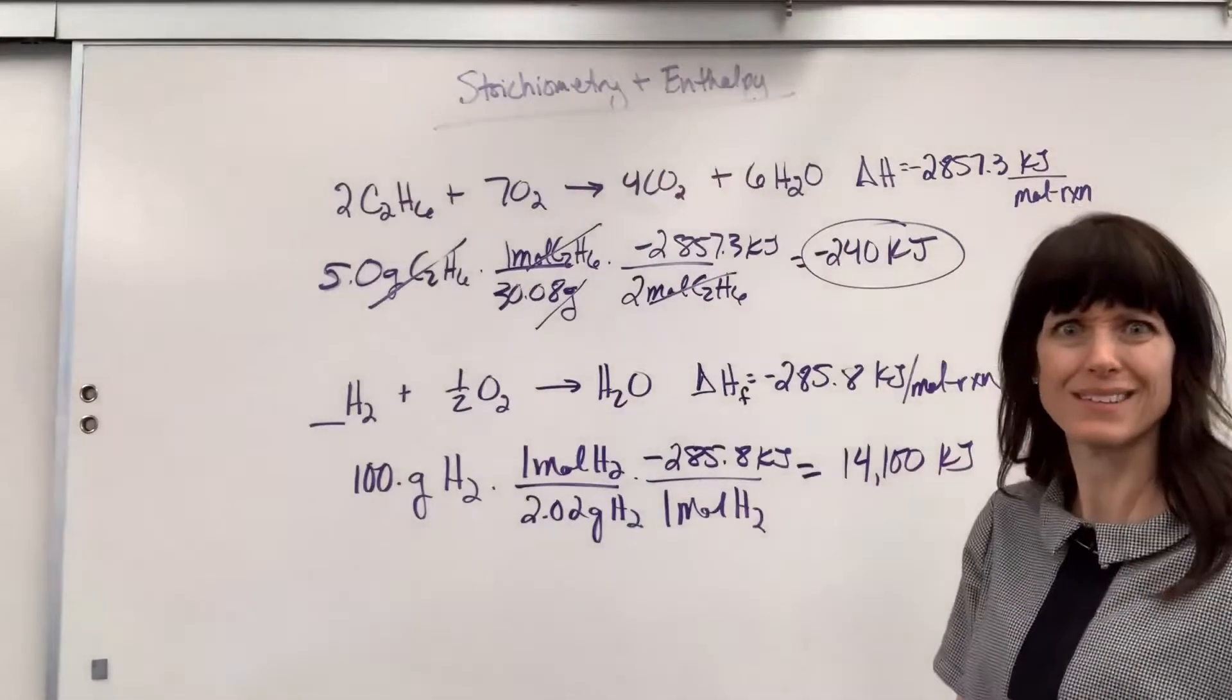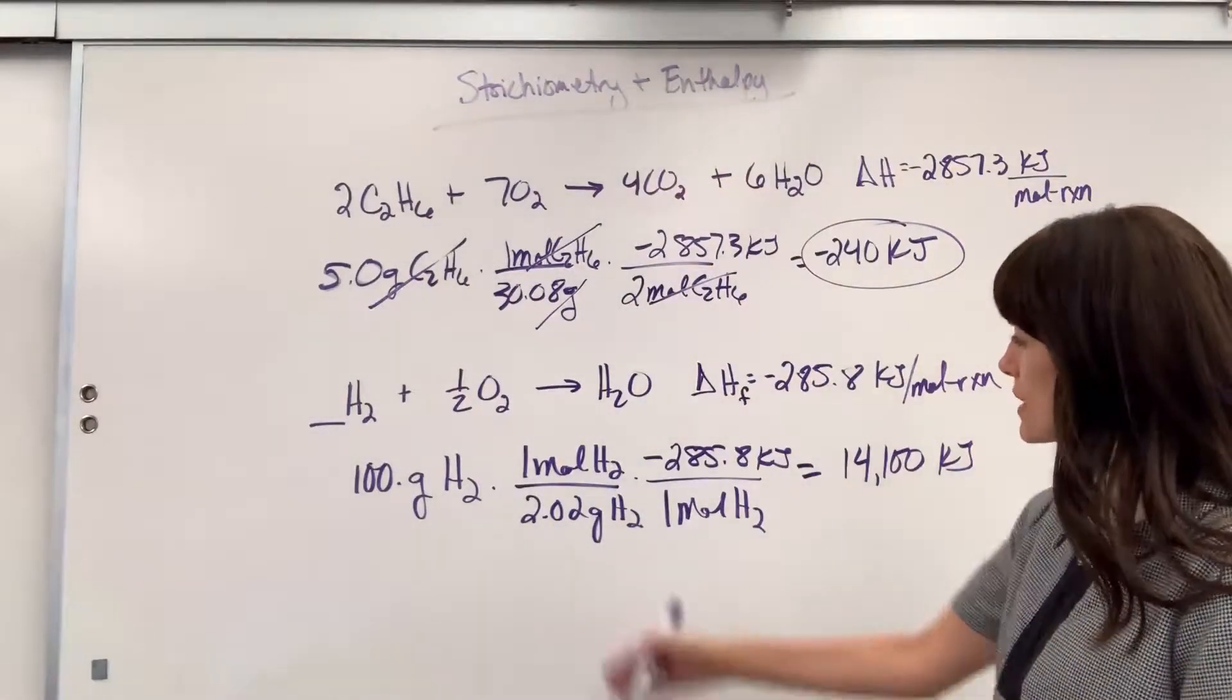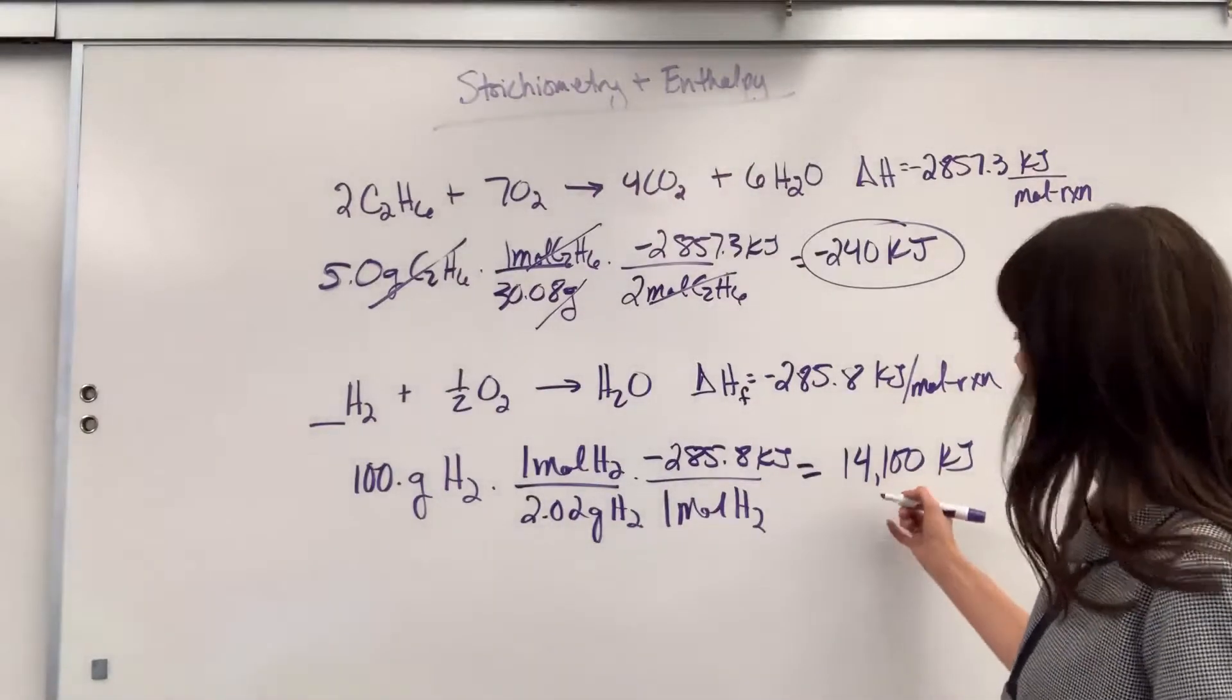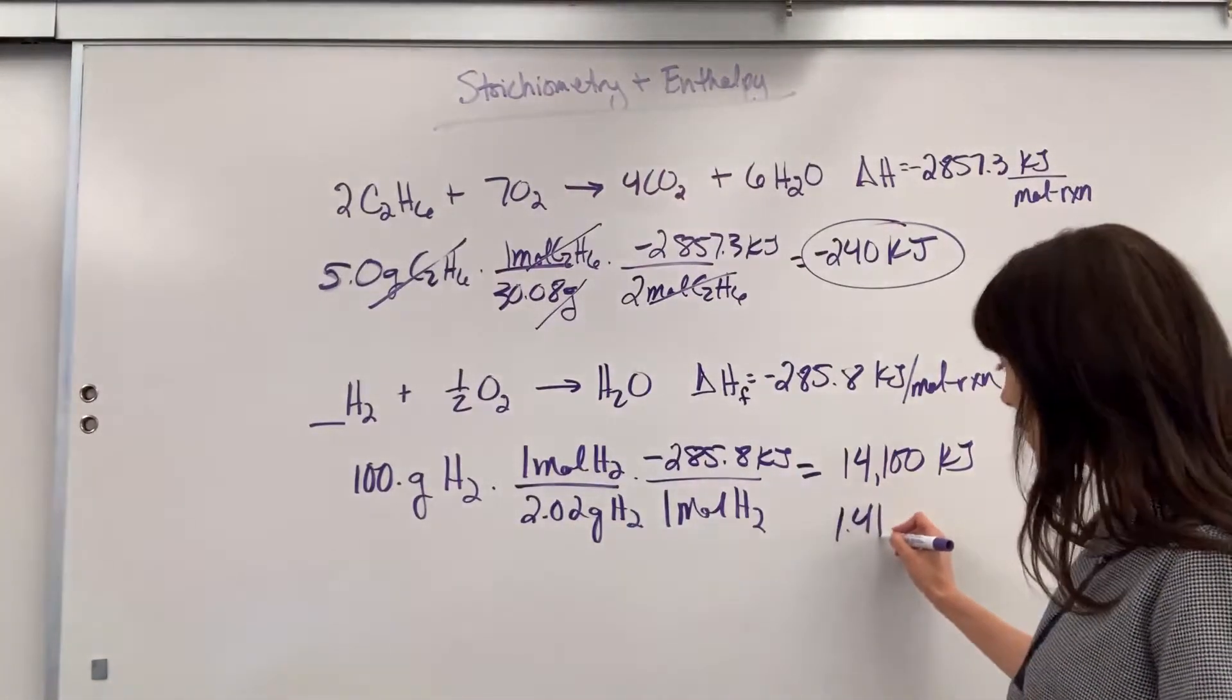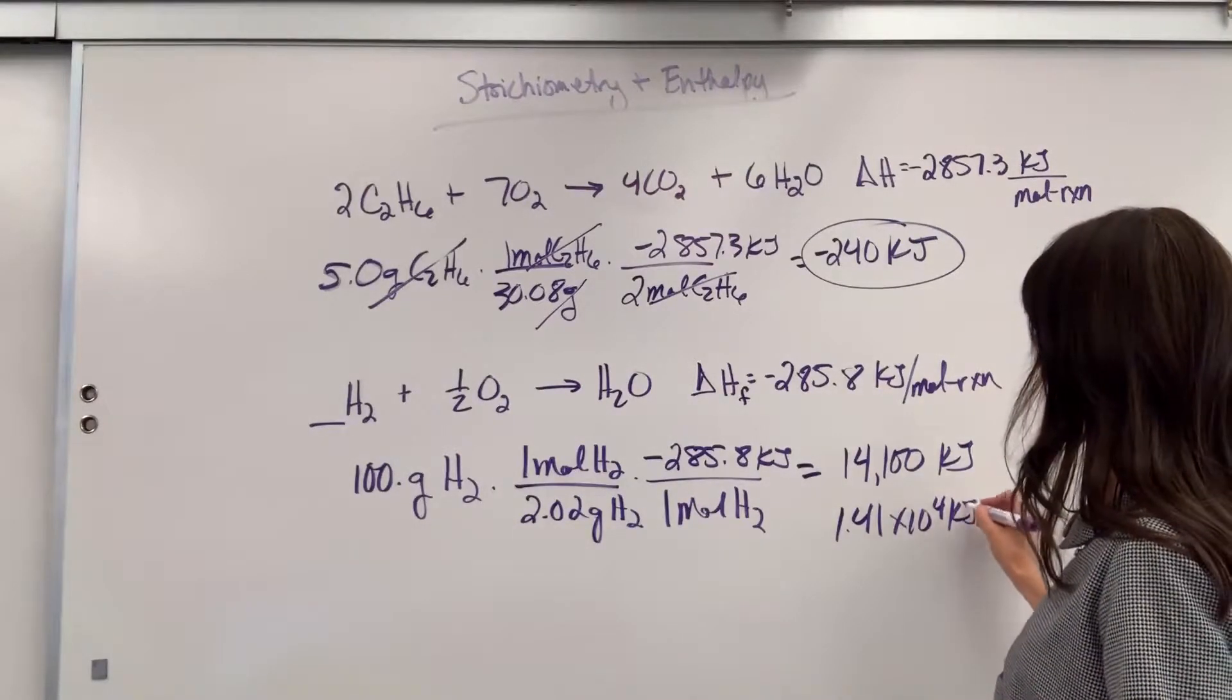Wow. Is that right? Yeah, that is right. It's going to give me 14,000, because that would be about 50 times. So I'm going to put this in scientific notation. 1.41, there's my three sig figs, times 10 to the four kilojoules.